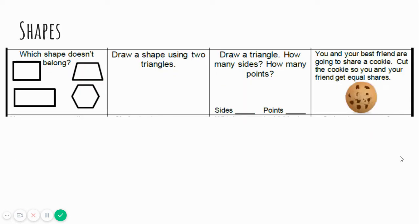Let's look at shapes. Which shape doesn't belong? There's something different about one of these shapes. What is it? This shape has four sides. That's a rectangle. This shape has four sides. That's a rectangle. This shape has four sides, but that's a trapezoid.